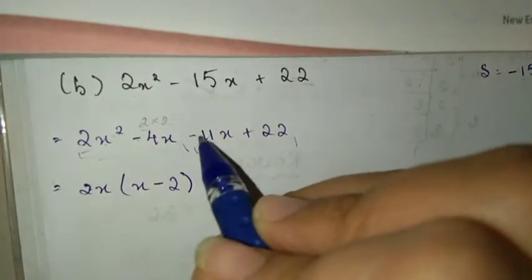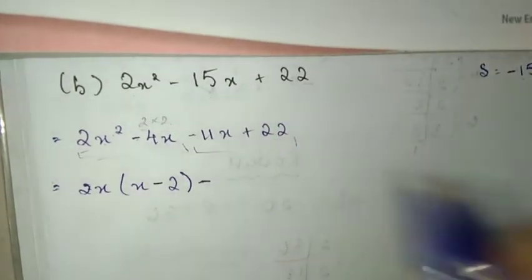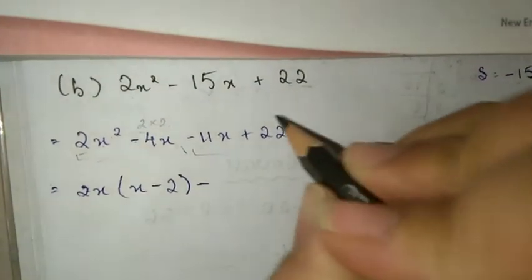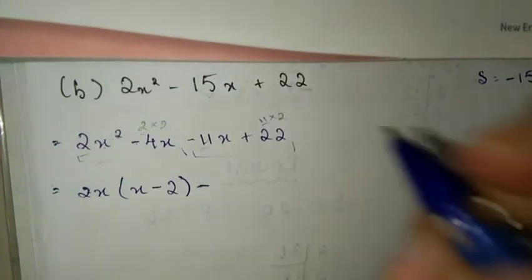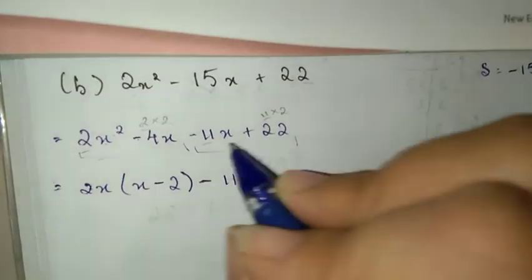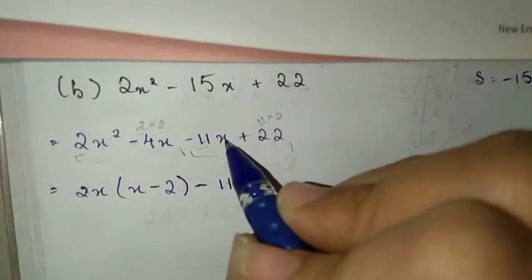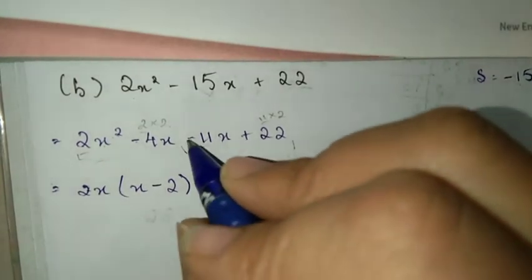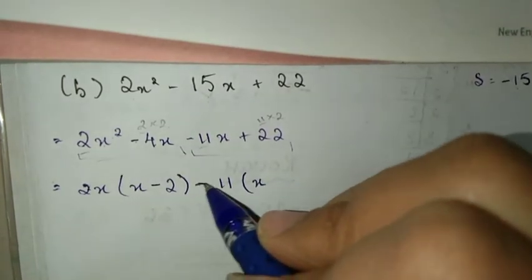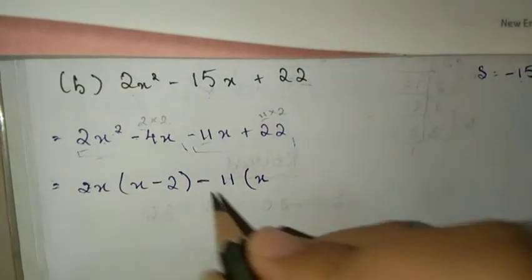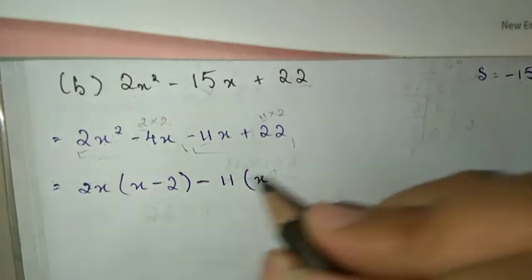Next term: minus 11 and 22, so 22 is 11 into 2. So x is common, so 11 can come out. Open bracket. Minus 11 in the bracket. The sign: minus into plus gives minus, so it's plus here. Minus into minus gives plus.